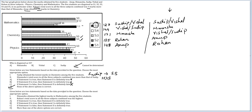Next question: given below are two statements based on the data provided. Statement 1: Himanshu obtained the highest marks in mathematics among the five students. The highest marks in mathematics belong to S4, so we are talking about Case 2 where Himanshu is S4. Statement 2: Rohan's total score in all the three subjects combined was the highest, meaning Rohan is S1. We are still in the second case. If Statement 1 is true, Statement 2 is definitely true — yes, this is valid and accurate.